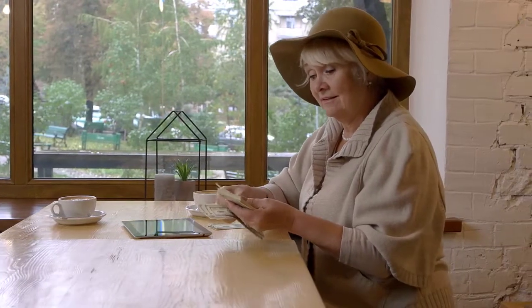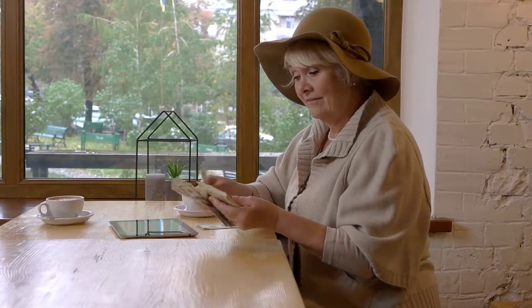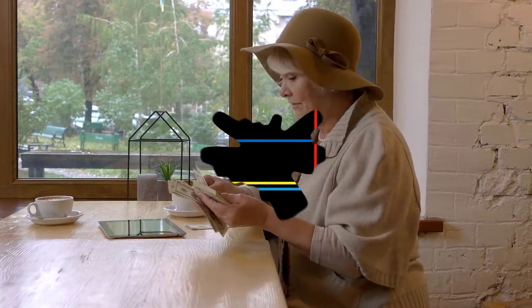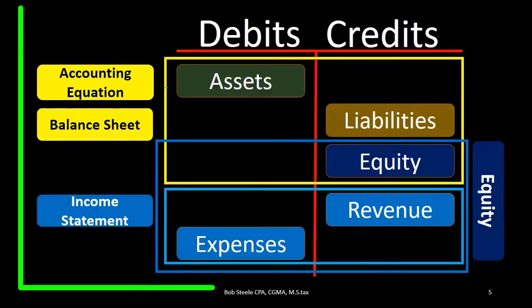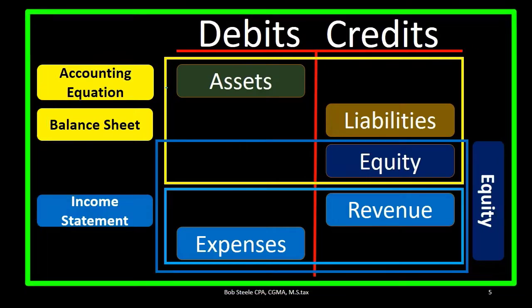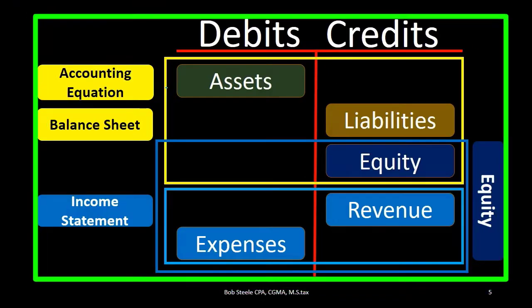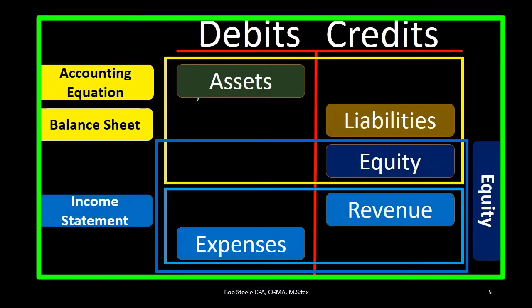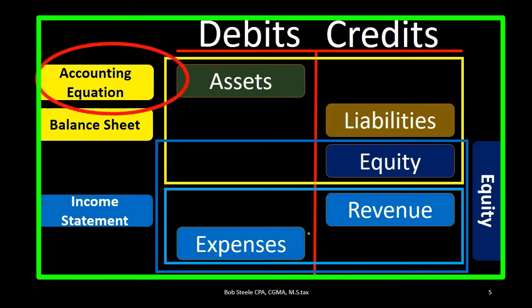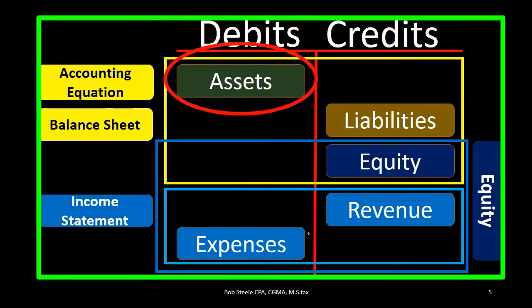Remember, this is our cheat sheet: assets are debit balances, liabilities are credit balances, equity is a credit balance, revenue is a credit balance, and expenses are debit balances.